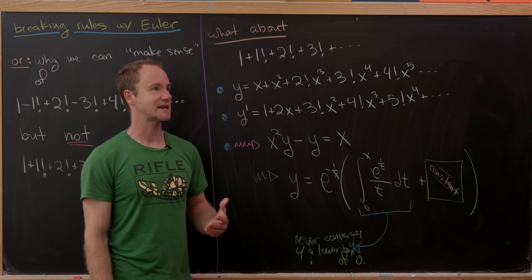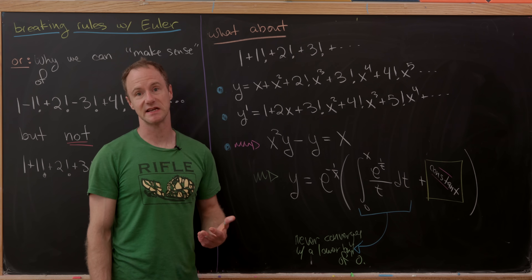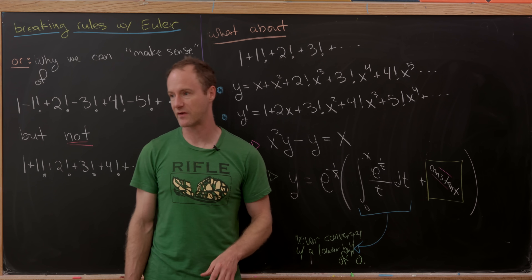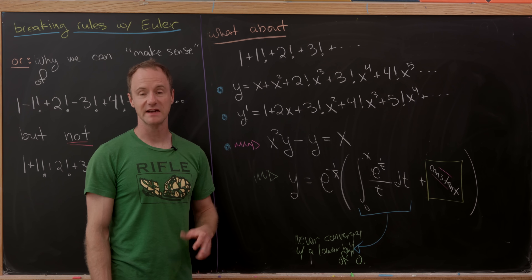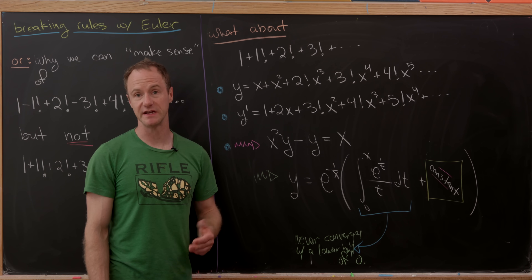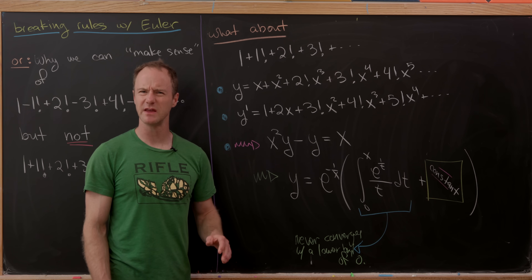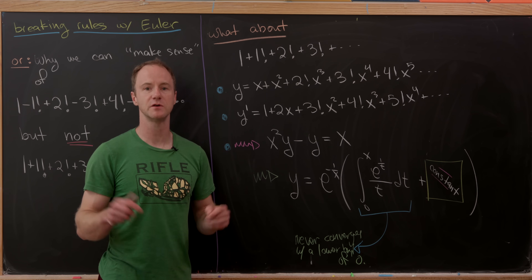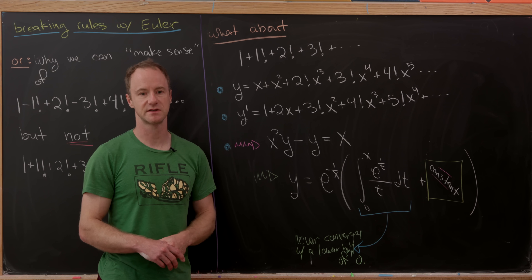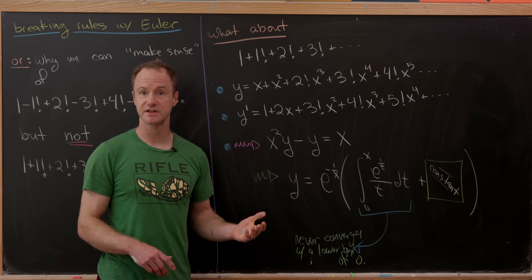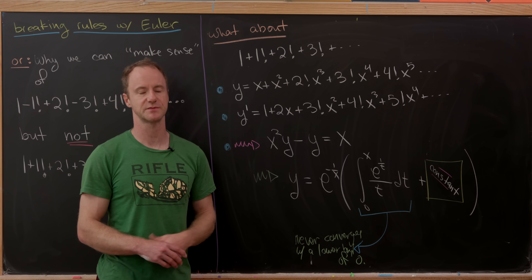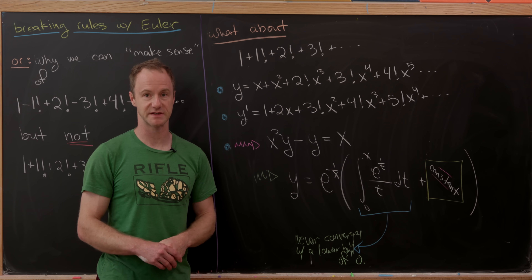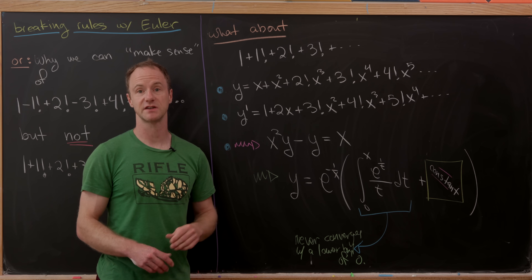So this strategy cannot be used to assign a value to this obviously divergent series. That doesn't mean a technique doesn't exist to assign a value — it just means this one doesn't work. I'm not sure if there is one or not; maybe if you know, post it in the comments.